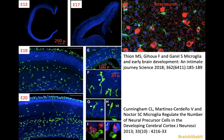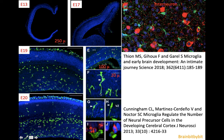Microglial cells migrate from the yolk sac into the brain parenchyma. These are mouse models where the microglial cells are shown in green at embryonic days 13, 17, 19, and 20, with the cortical plate and the ventricular zone below. These microglial cells regulate the neural precursor cells in the developing cortex, and they even resemble radial glial cells with a similar bipolar shape. In another picture from an embryonic mouse somatosensory cortex, you can again see the green microglial cells having a close relationship with the red neurons.